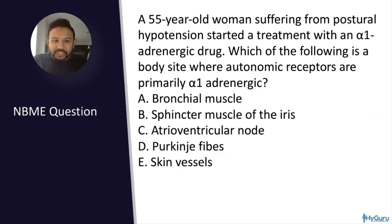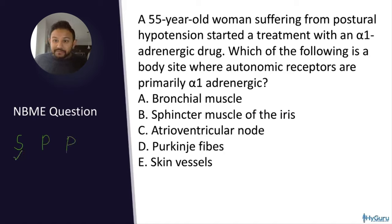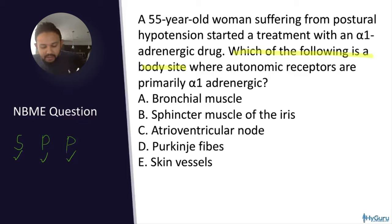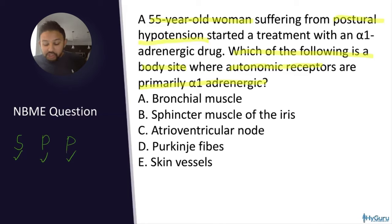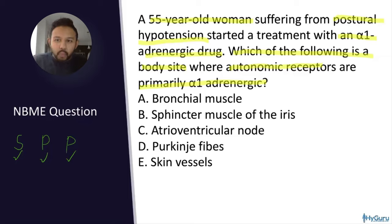Which of the following is a body site where autonomic receptors are primarily alpha-1 adrenergic? A 55-year-old woman suffering from postural hypotension is treated with an alpha-1 adrenergic drug. This question is asking where alpha-1 receptors are located. The answer is E — the dilator muscle of the iris. Alpha-1 is also vasoconstricting at the level of the skin; that's why during fight-or-flight you get cool, cold, and clammy skin due to alpha-1 vasoconstriction.